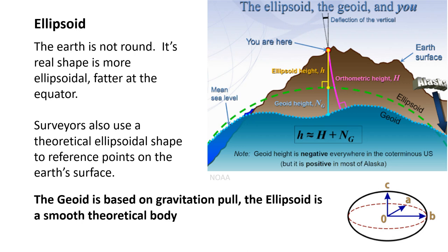An ellipsoid — the next concept — is that the Earth is not a ball. It's not round; it's actually an ellipsoid. It's fatter at the equator due to the centrifugal force of the Earth's spin. The Earth bulges out at the equator. So if we wanted to give a generalized shape it would be an ellipsoidal shape, not a sphere. So we look at this theoretical ellipsoid, which would be the theoretical level of the Earth if you average everything out.